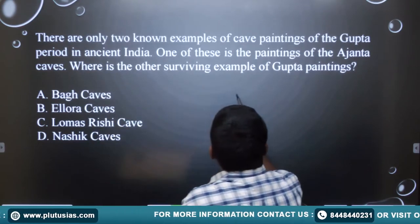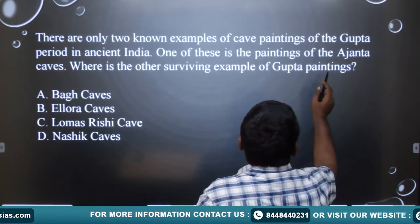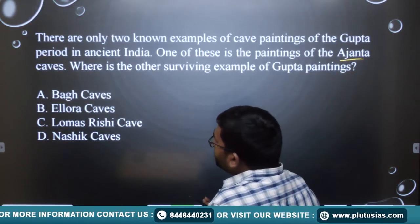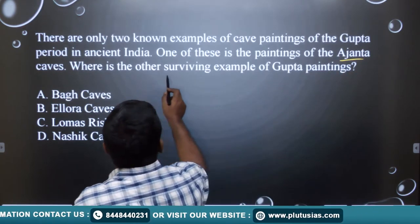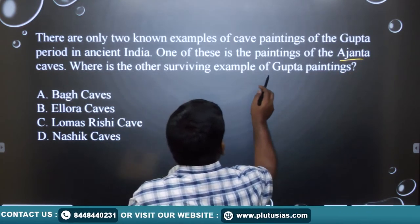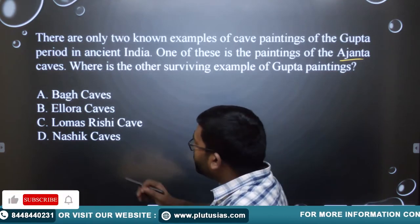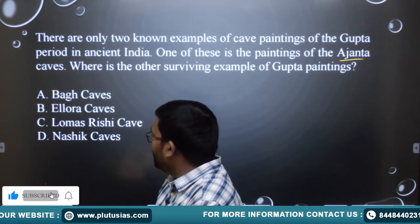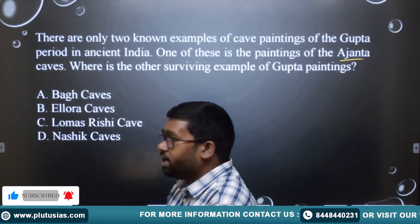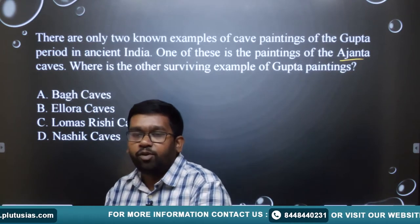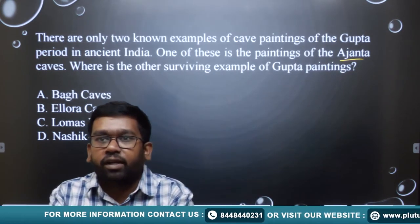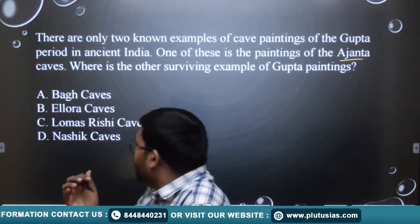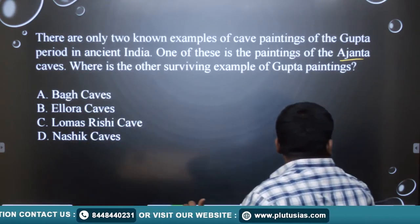One question is: there are only two known examples of cave paintings of the Gupta period in ancient India. One of these is the painting of Ajanta caves — where is the other surviving example? The options are: Bagh caves, Lora caves, Lomas Rishi cave, and Nasik caves. Please answer this question in the comments.